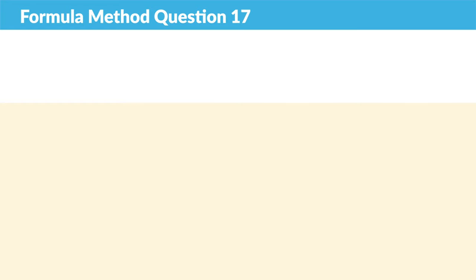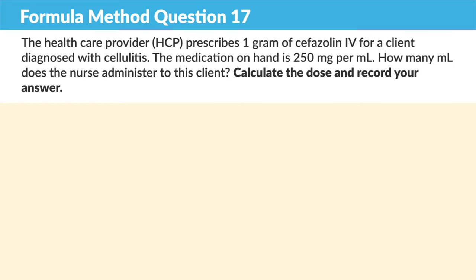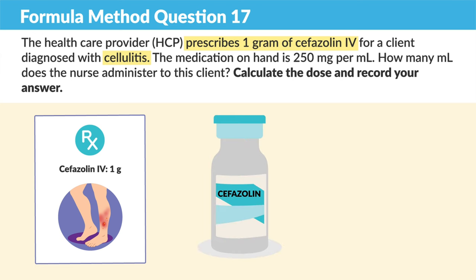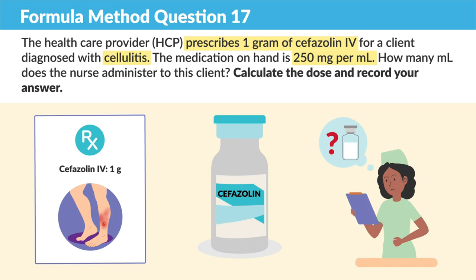For number 17, the healthcare provider prescribes 1 gram of cephalazolin IV for a client diagnosed with cellulitis. The medication on hand is 250 milligrams per mL. How many mLs does the nurse administer to this client?